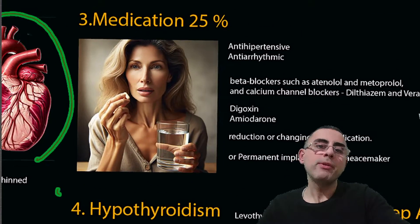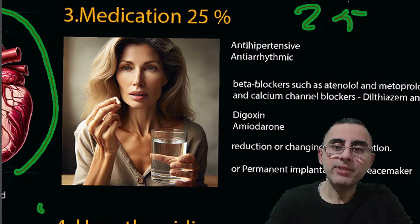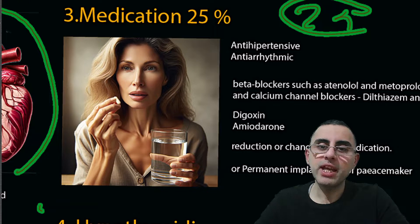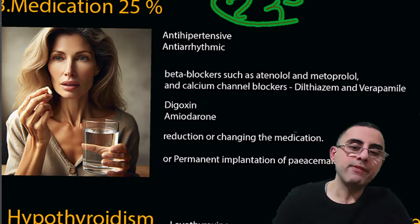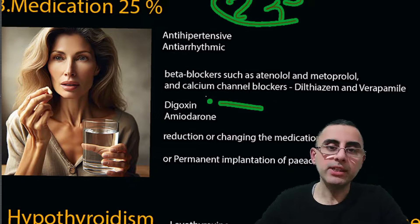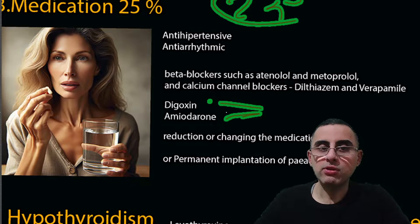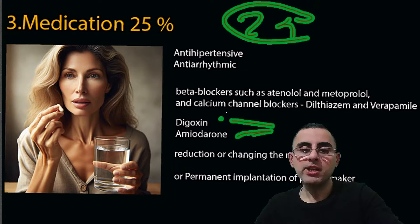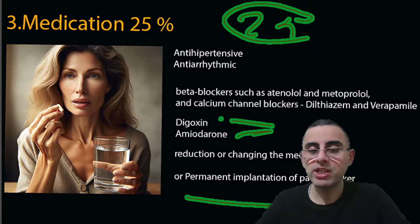The third most common cause of slow heart rate is medications, accounting for around 25 percent of cases. Antihypertensive and anti-arrhythmic medications commonly cause bradycardia — such as beta blockers like atenolol and metoprolol, calcium channel blockers like diltiazem and verapamil, digoxin used for heart failure, and amiodarone, an anti-arrhythmic drug. Treatment for medication-induced bradycardia is reduction or changing of the medication; if not possible, permanent pacemaker implantation is recommended.